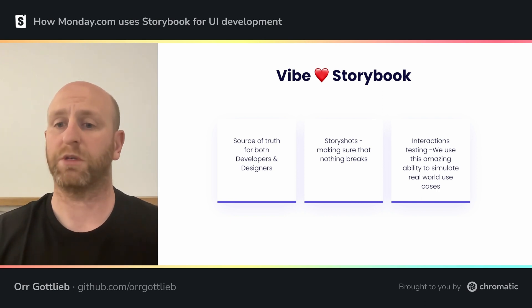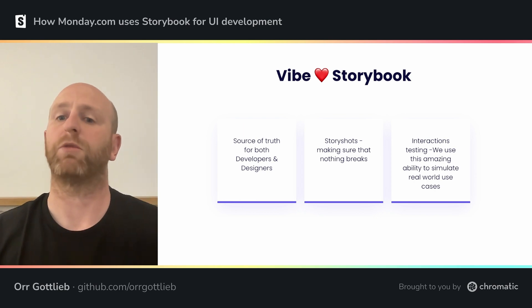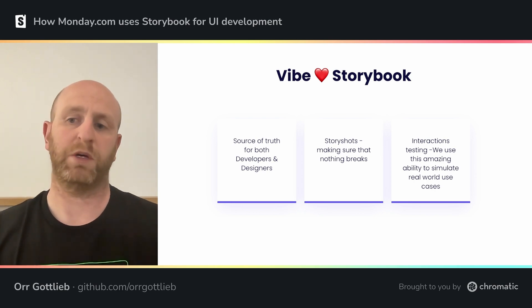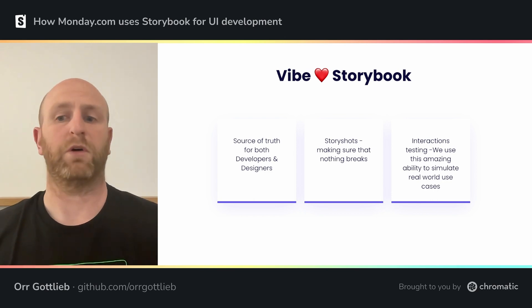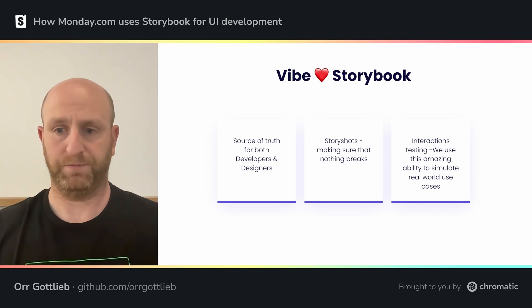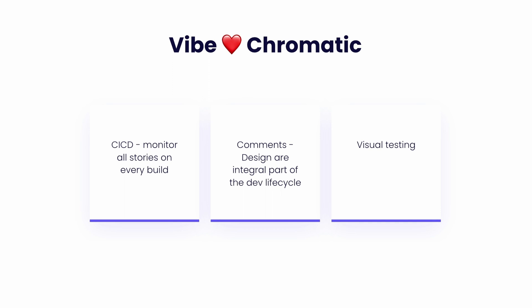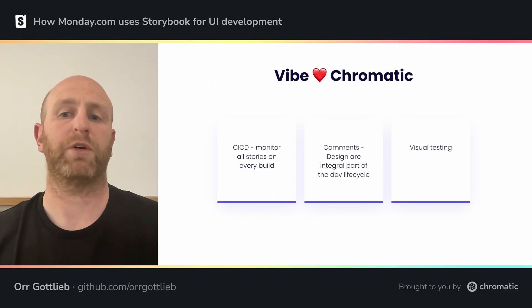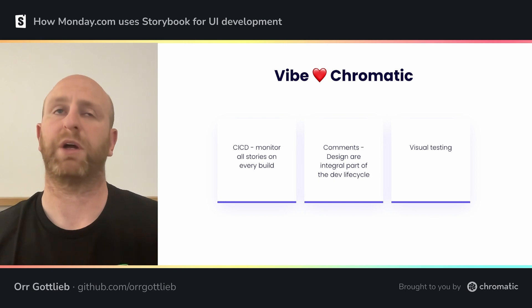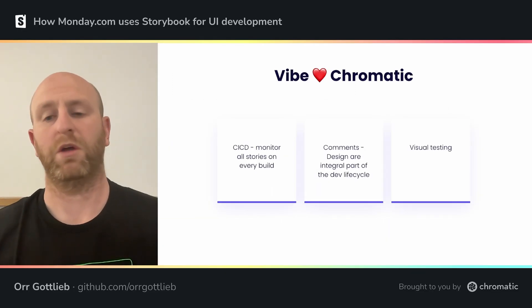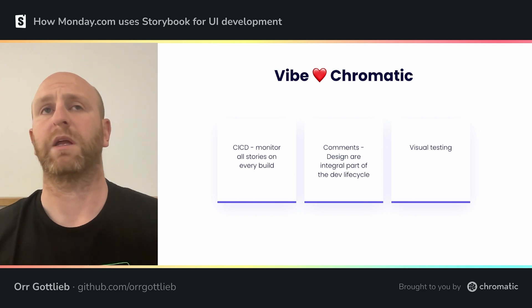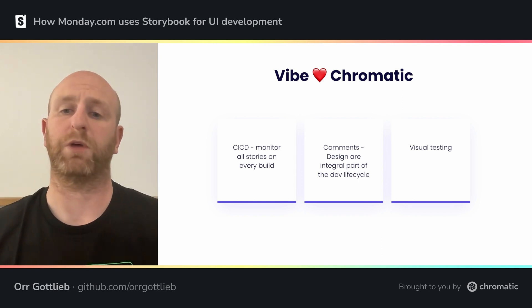We use StoryShots to make sure that nothing changes other than what we really want to change. We're using interaction testing to test complex flows on a real browser. We integrated Chromatic into our CI/CD pipeline; we use it to run all of our tests in a real browser on every branch, on every change. We work with comments to bring designers right into our dev lifecycle, getting feedback and design reviews from a very early stage, thus preventing bugs and delivering the best product we can.